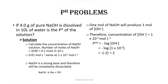Using the third formula, pH plus pOH equals 14. Since pOH equals 2, pH equals 14 minus 2, which equals 12. That is how we solve this problem.